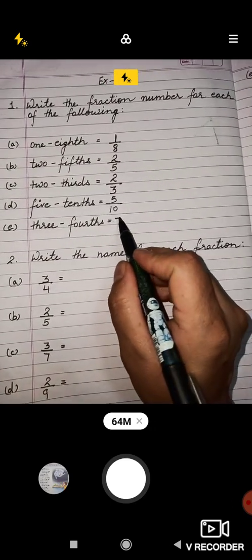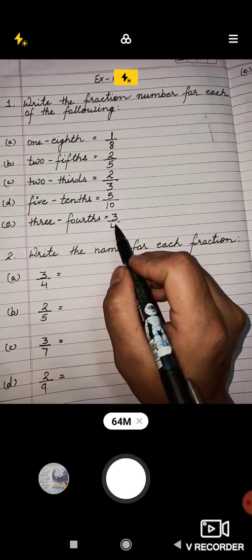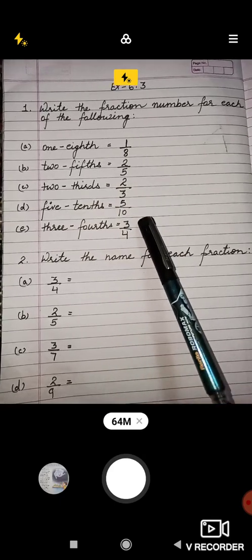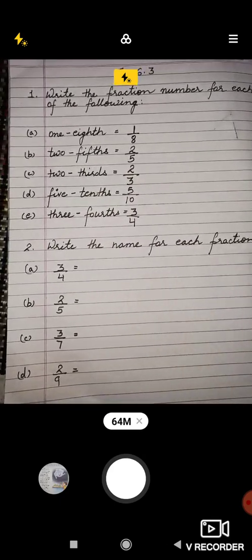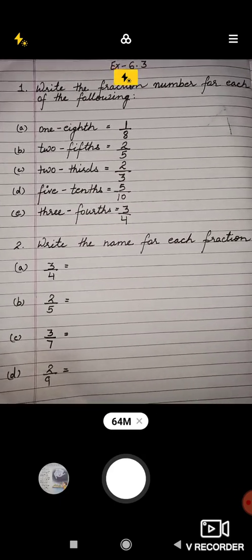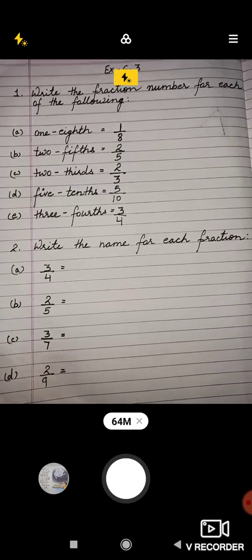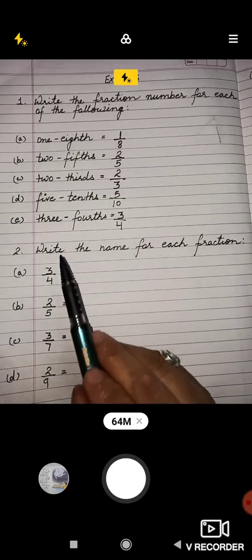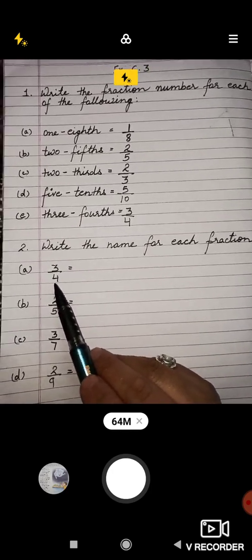Now in second question, just opposite - it means the fraction is given to you and you have to write the name. So the fraction is three upon four. That means three - first we will write three, then put dash, then four.